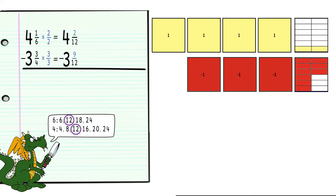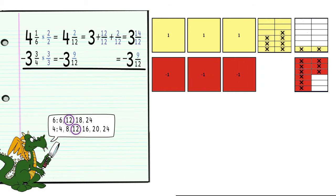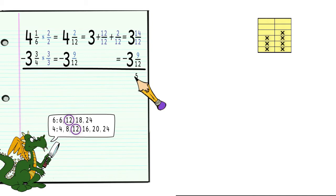Since we only have two-twelfths, we cannot take away nine-twelfths. We will have to change one of the unit pieces into twelve-twelfths. That would give us three plus twelve-twelfths plus two-twelfths, or three and fourteen-twelfths. Now we can subtract three and nine-twelfths from three and fourteen-twelfths, leaving us with five-twelfths.